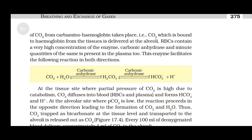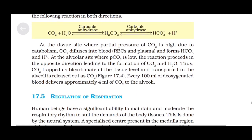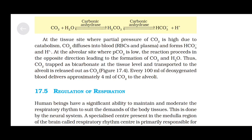RBCs contain a very high concentration of the enzyme carbonic anhydrase, and minute quantities of the same are present in the plasma too. This enzyme facilitates the following reversible reaction: CO2 + H2O ⇌ H2CO3 ⇌ HCO3⁻ + H⁺. At the tissue site, where partial pressure of CO2 is high due to catabolism, CO2 diffuses into the blood, RBCs, and plasma, and forms HCO3⁻ and H⁺.